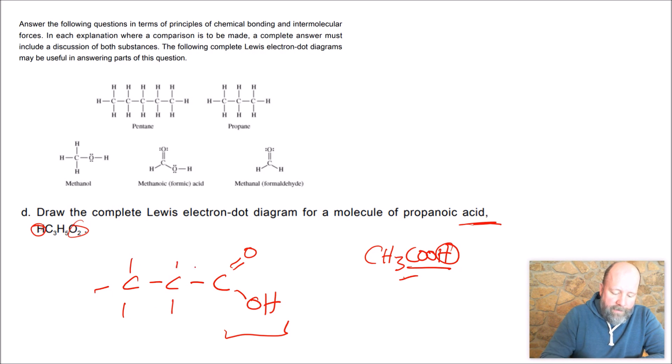And then one, two, three, four, five hydrogens. And now everybody's happy. You can check if you want, but everybody should be happy there. That's not a very difficult one to do, propanoic acid. Of course, don't forget, you got to put all of your electrons on here. So don't forget those.